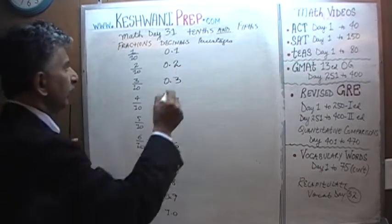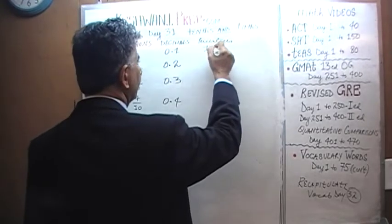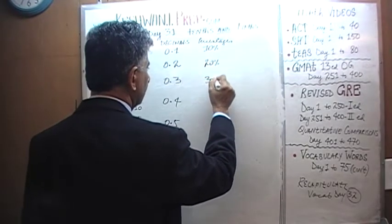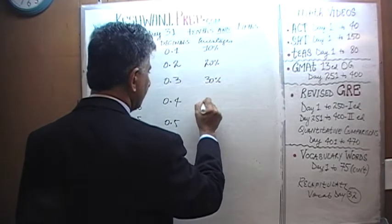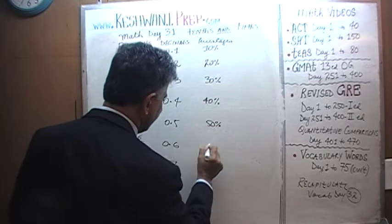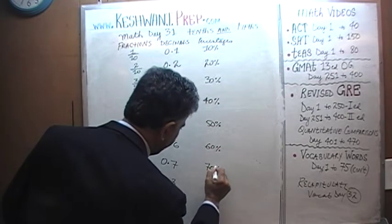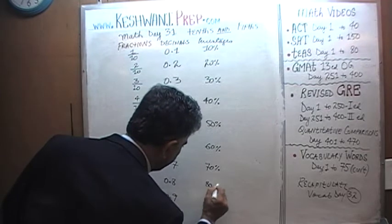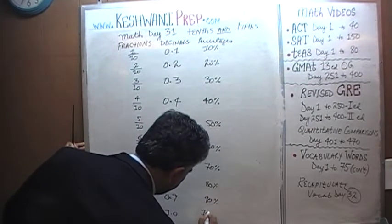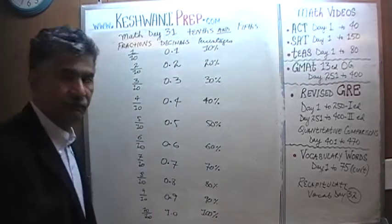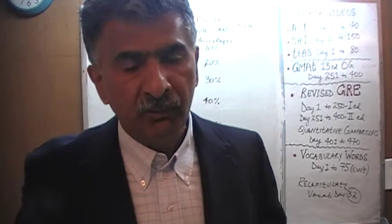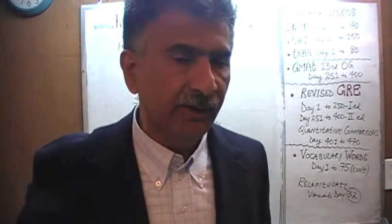And in percentage form, they are simply 10%, 20%, 30%, 40%, 50%, 60%, 70%, 80%, 90%, and finally 100%. The question here is: what was the point of all this? This is too simple — everybody knows the tenths.